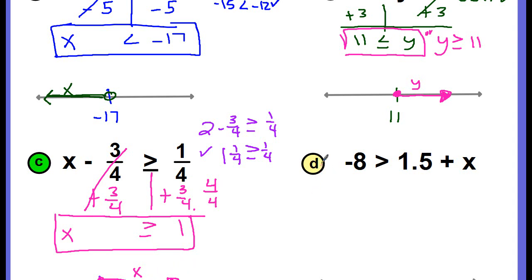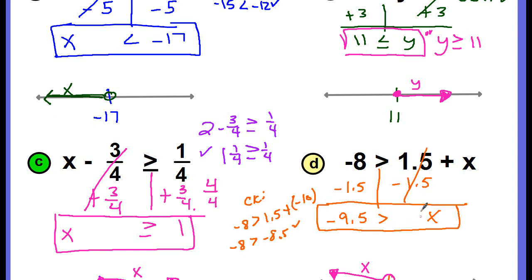Pause the video and work problem D by yourself. Did you get that negative 9 and 5 tenths is greater than x? Or writing x first: x is less than negative 9 and 5 tenths. To isolate x on the right side, we zero out the 1 and 5 tenths by adding negative 1 and 5 tenths to both sides. Both numbers are negative, so combining them gives negative 9 and 5 tenths is greater than x. To check, choose a value less than negative 9.5 — I chose negative 10. Combining 1.5 and negative 10 gives negative 8.5, and negative 8.5 is less than negative 8, so we solved it correctly.